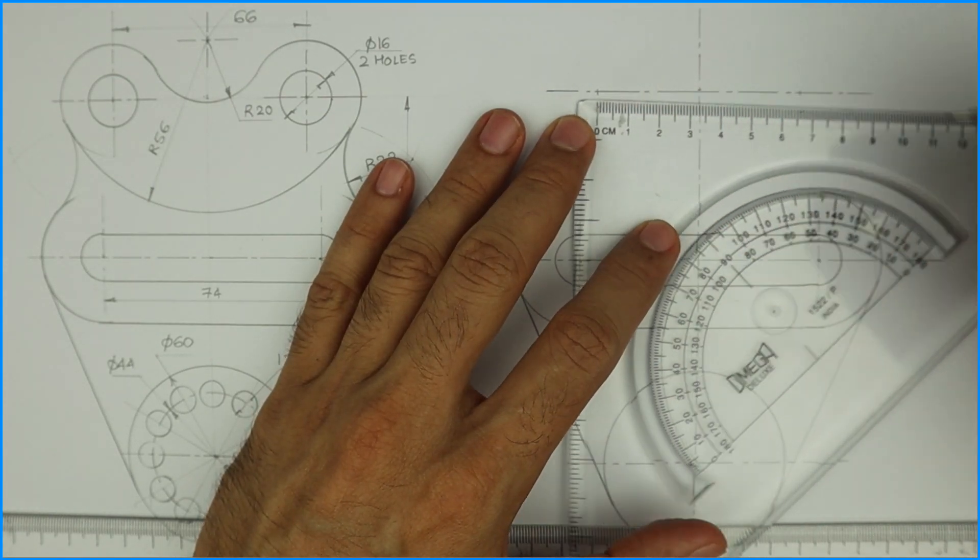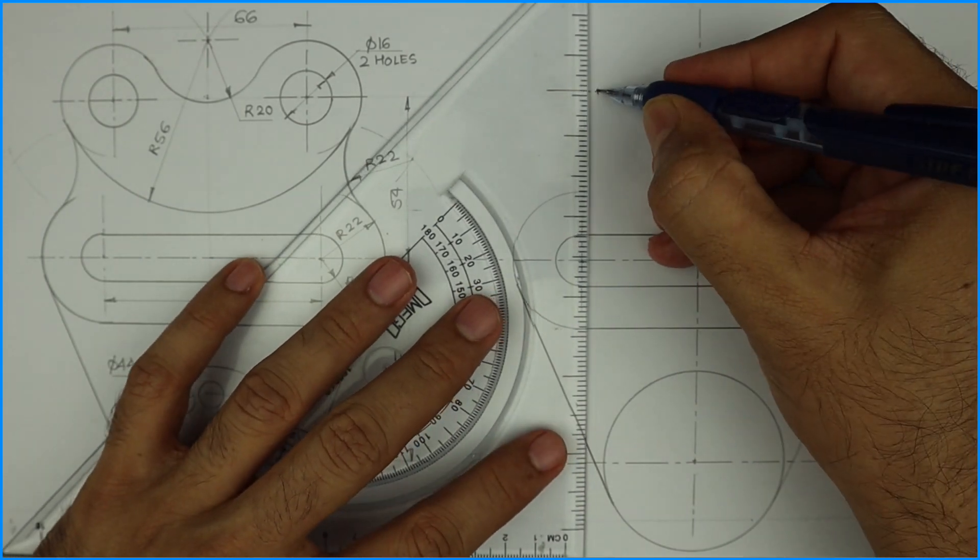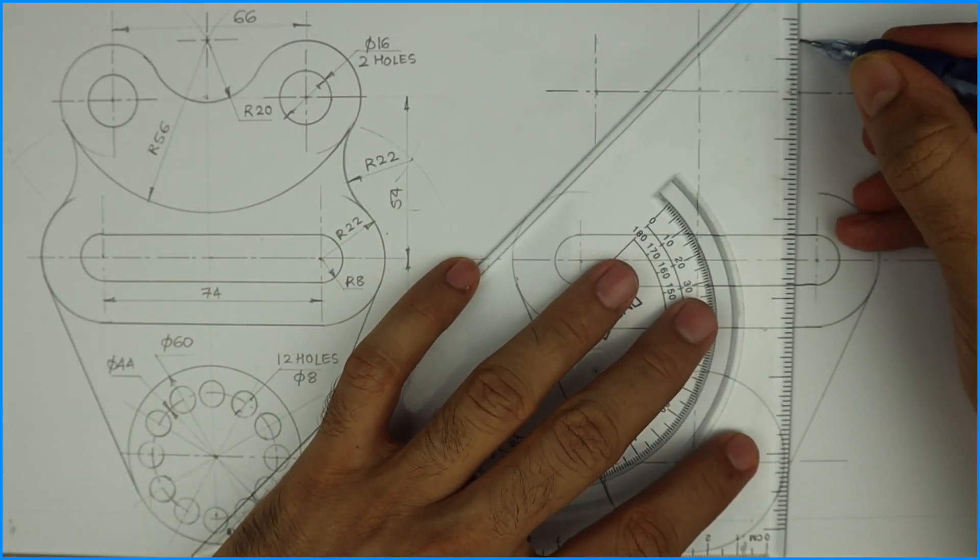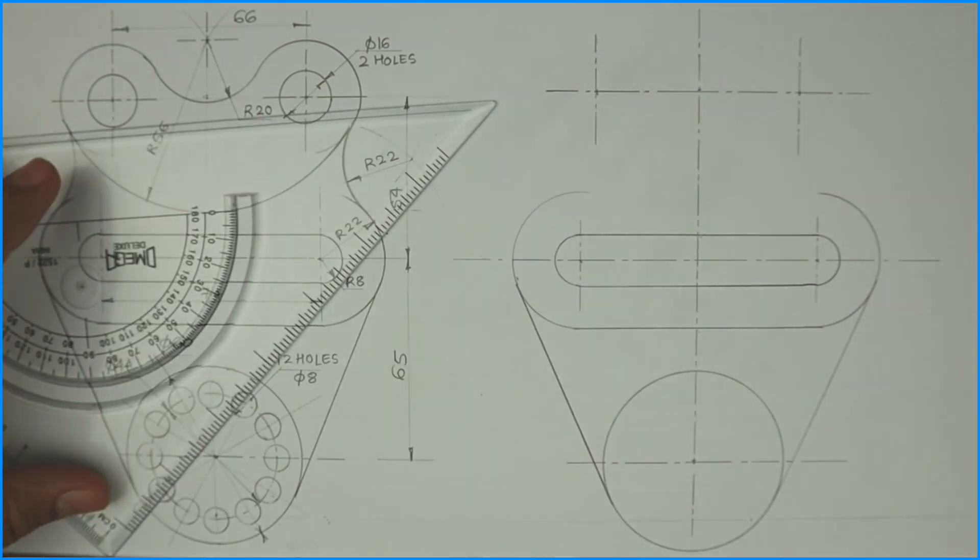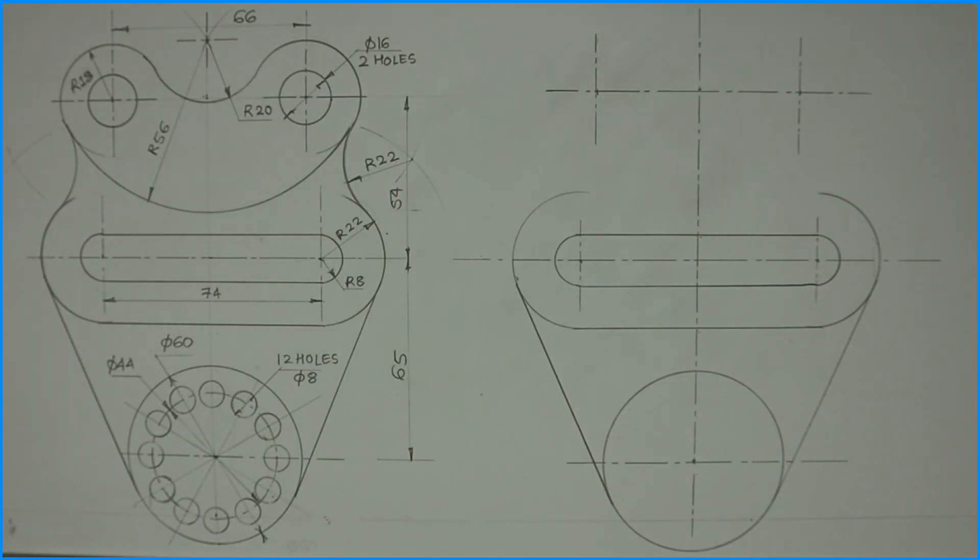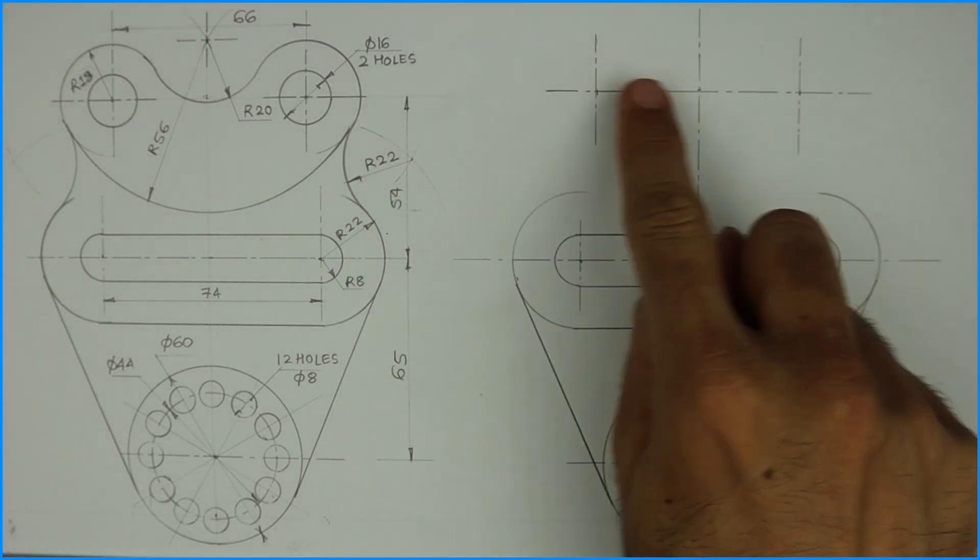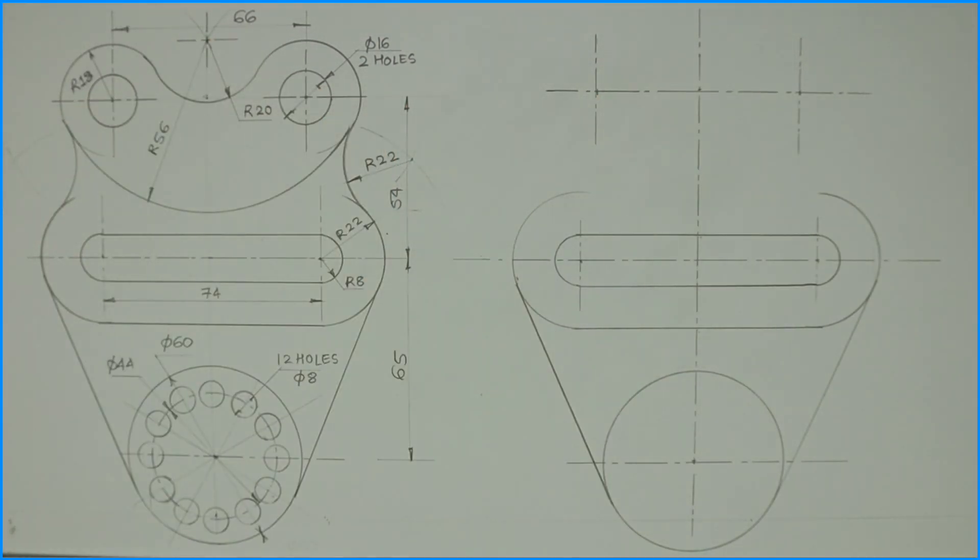Then we'll draw two circles of radius 18. First we will draw the axis line and then we'll draw two circles of radius 18.